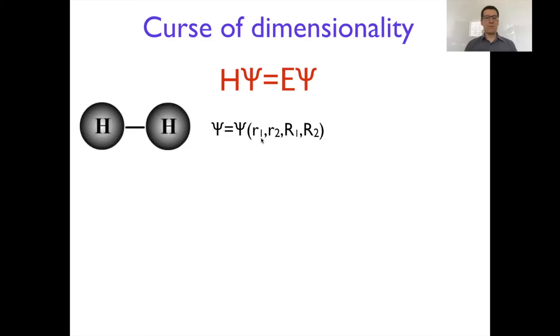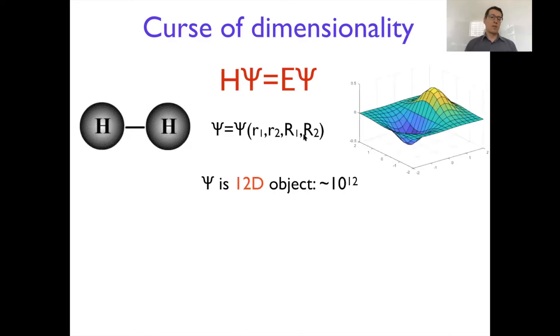But even without spin, just three-dimensional coordinates x, y, and z for each of these r's, in total the wave function is 12-dimensional. And since the equation is not exactly solvable, you can obtain the solution numerically, but to store the wave function you would need to put it on the grid.